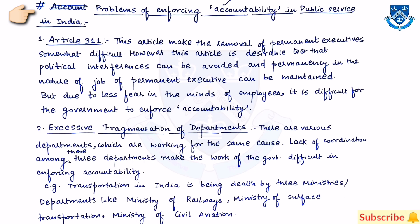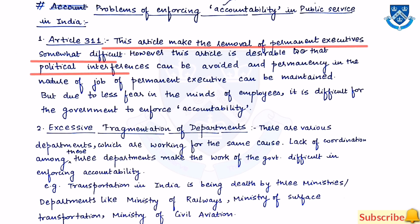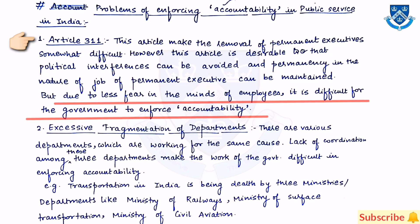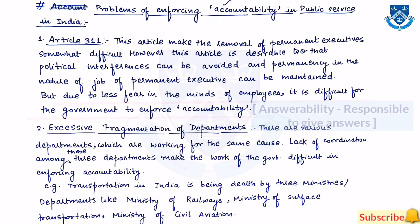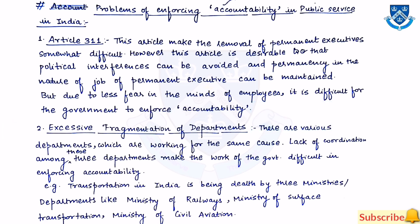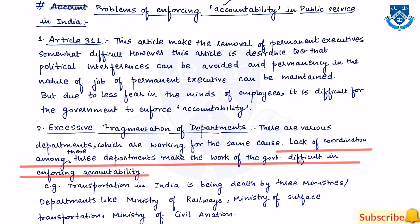Problems of enforcing accountability in public service in India: First, Article 311 makes the removal of permanent executives somewhat difficult. However, this article is desirable so that political interference can be avoided and permanency in the nature of the job of permanent executives can be maintained. Due to less fear in the minds of employees, it is difficult for the government to enforce accountability. Second, excessive fragmentation of departments — various departments working for the same cause leads to lack of coordination, making enforcement of accountability difficult.